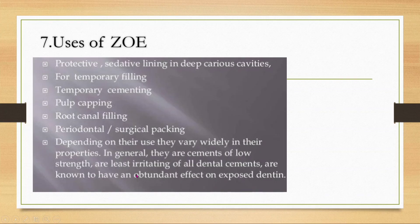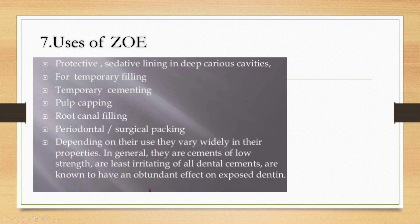Zinc oxide eugenol is a cement very commonly used in pediatric dentistry. Uses include: protective sedative lining on deep caries cavities, temporary filling, temporary cementation, pulp capping, root canal filler, and periodontal surgical packing. In general, these are cements of low strength, least irritating of all dental cements, and are known to have an obtundent effect on exposed dentin.